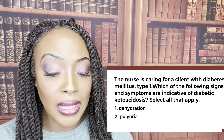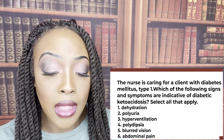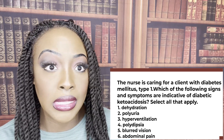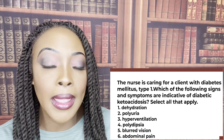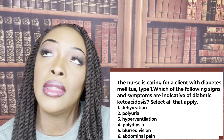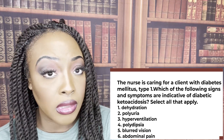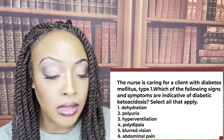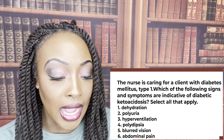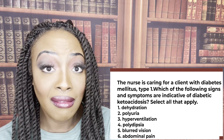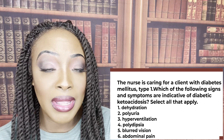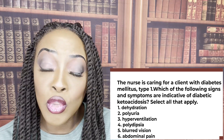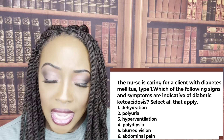The nurse is caring for a client with diabetes mellitus type 1. Which of the following signs and symptoms are indicative of diabetic ketoacidosis? Select all that apply — we treat them as true or false. One, dehydration. True — because when a patient goes through diabetic ketoacidosis, they're doing a lot of polyuria, so they're losing their fluids and will experience dehydration.